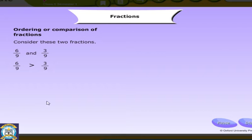Now, how do we compare the fractions with different denominators? It is very simple. We just have to get the denominators to be equal. How do we do that? Consider the following fractions.